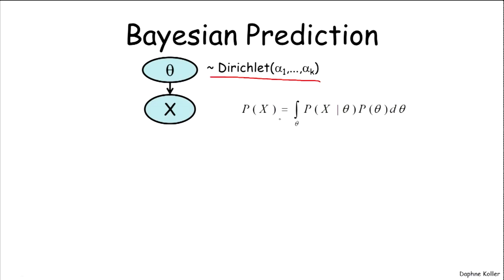And so the probability of x is simply the probability of x given theta times the prior over theta, marginalizing, in this case corresponding to an integration, over the value of theta.